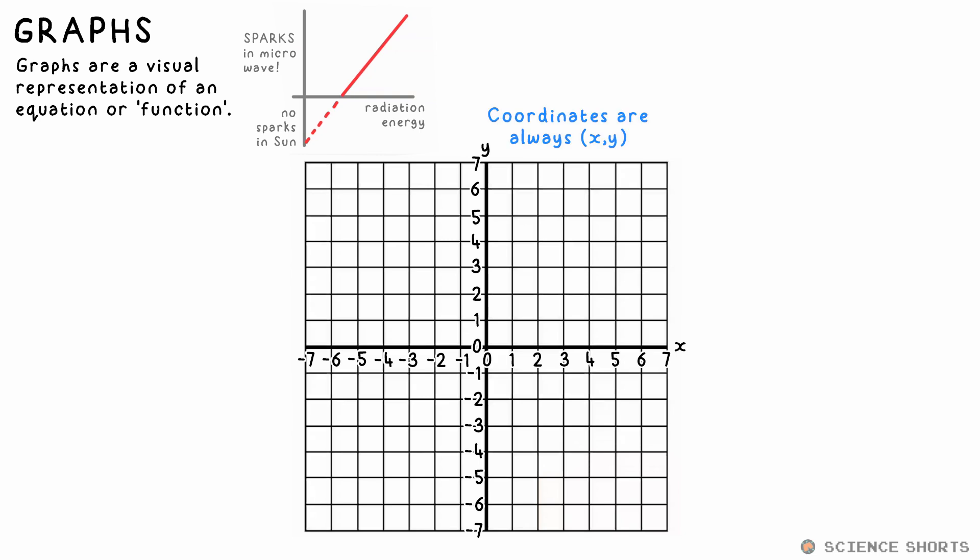The first number is always the x value, then the y. Just put a dot where those two meet. Go across first with the x, down the hall as they say, then up with the y, up the stairs.